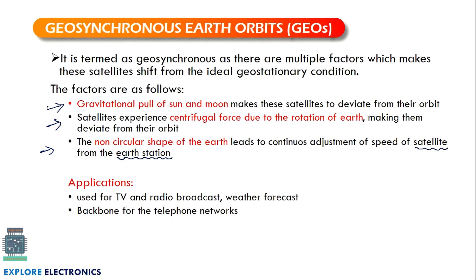Because of gravitational pull, centrifugal force, and other factors, there may be slight variations in the satellite's speed and motion, which are continuously controlled by the earth station. A Master Control Facility (MCF), such as the one at Hassan, performs controlling functions for geostationary satellites and keeps track of satellite speed and position. Applications of GEO satellites include TV and radio broadcasting, weather forecasting, and backbone telephone networks.